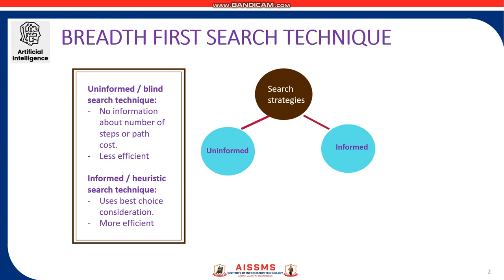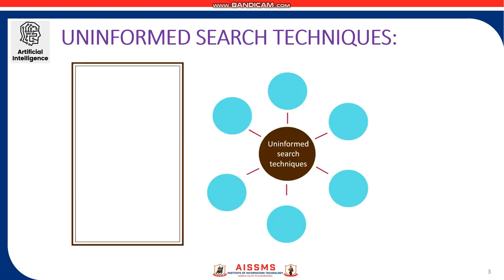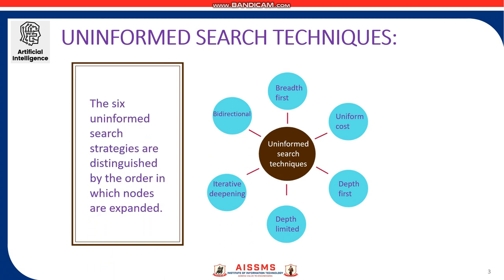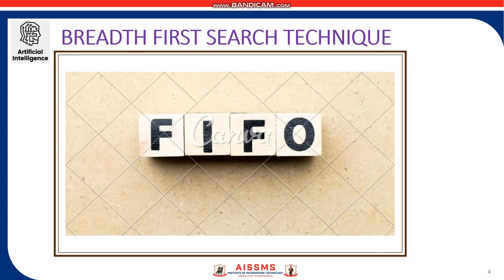Uninformed search is less effective than informed search. There are six uninformed search strategies and they are: breadth-first search, uniform cost search, depth-first search, depth-limited search, iterative deepening search, and bi-directional search. All these different uninformed search strategies are distinguished by the order in which nodes are expanded.